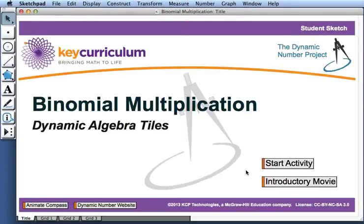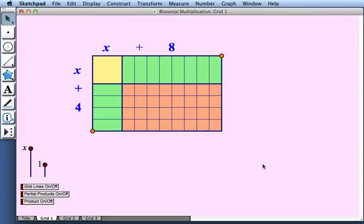This movie describes how to use the pair of activities binomial multiplication dynamic algebra tiles. Here we have algebra tiles arranged in a grid and they represent the product of x plus 4 times x plus 8.